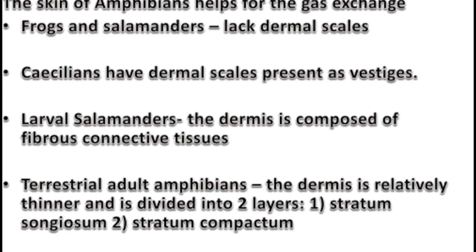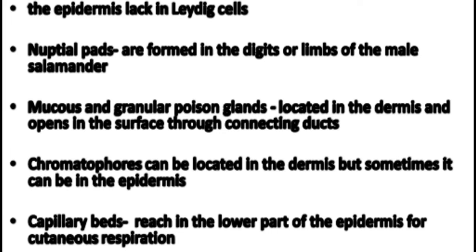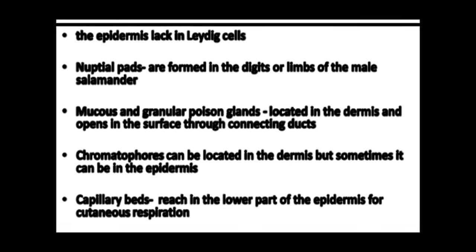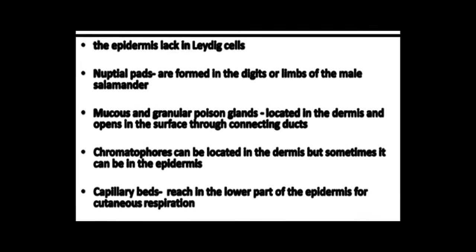The skin of amphibians that have cutaneous gas exchange, like the frogs and salamanders, lack dermal scales. The caecilians have dermal scales present as vestiges. The larval salamanders have the dermis composed of fibrous connective tissue. The terrestrial adult amphibians have a dermis that is relatively thinner and divided into two layers: the stratum spongiosum and the stratum compactum. The epidermis lacks lipid cells. You also have nuptial pads which are formed in the digits or limbs of the male salamander.